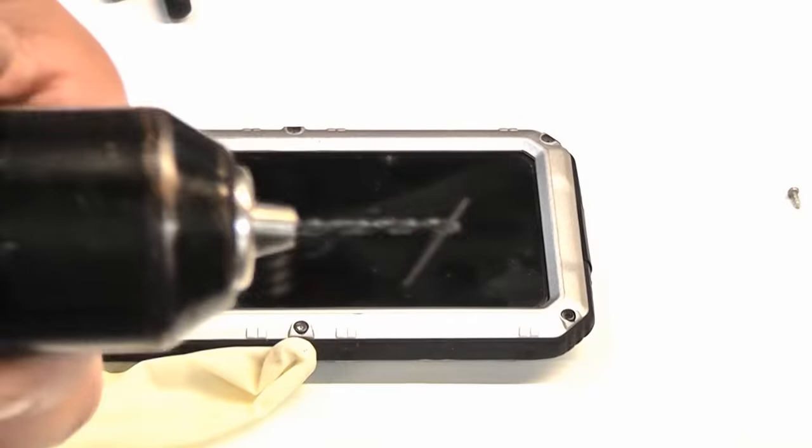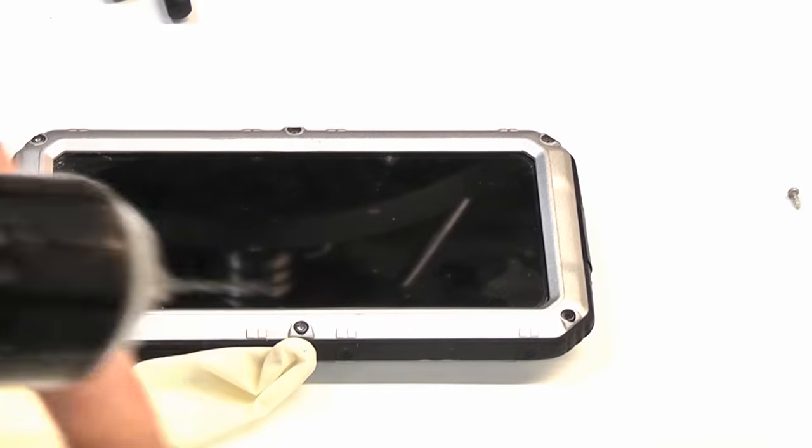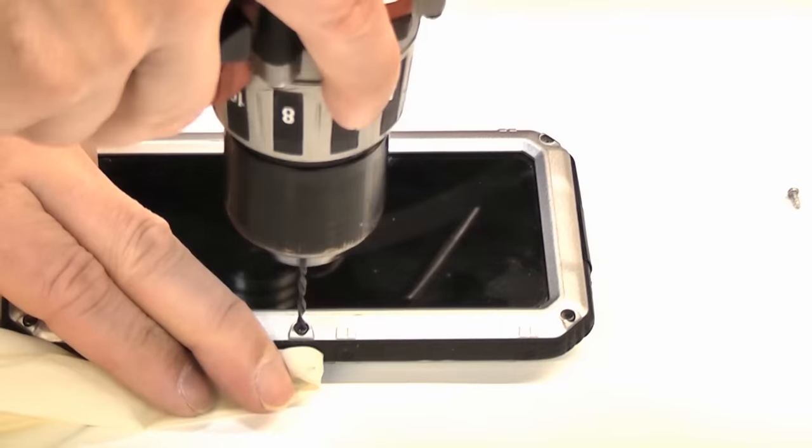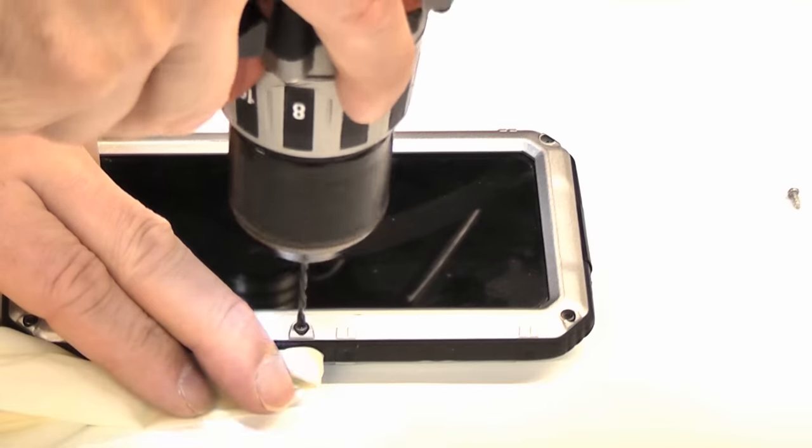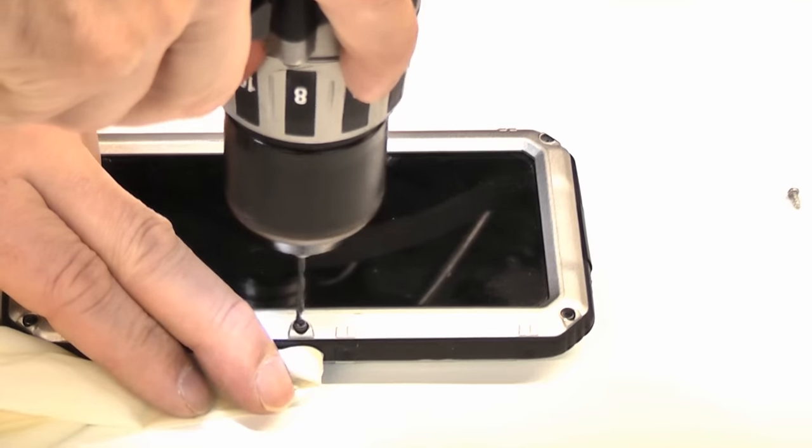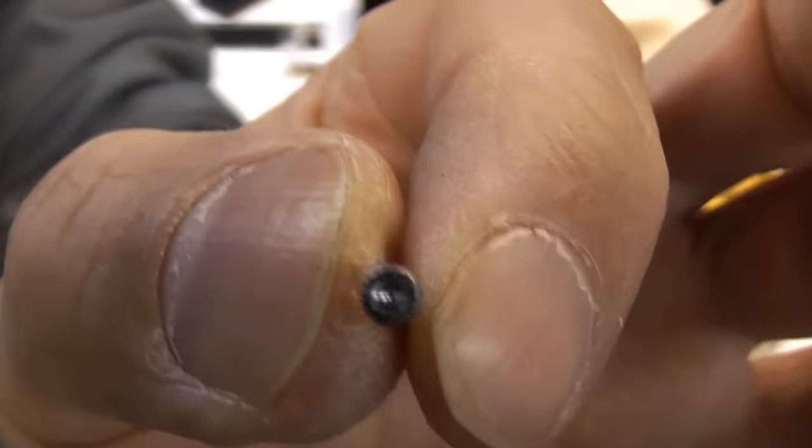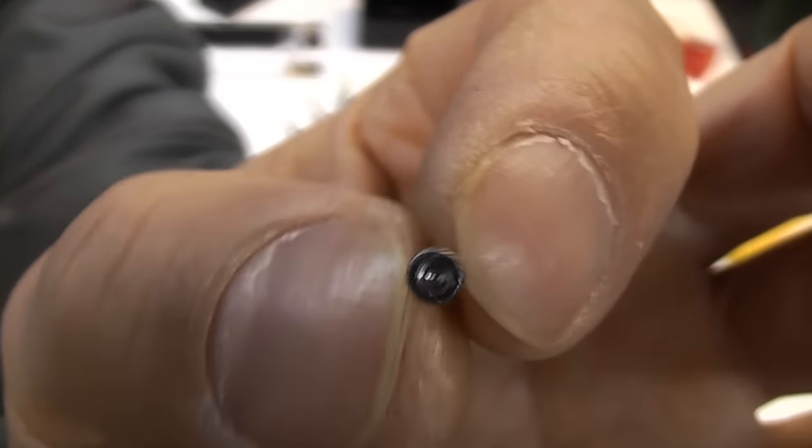Again, I'm going to ensure that the drill is in reverse and on a slow speed. As you can see, that actually bit into the screw and removed it quite easily.